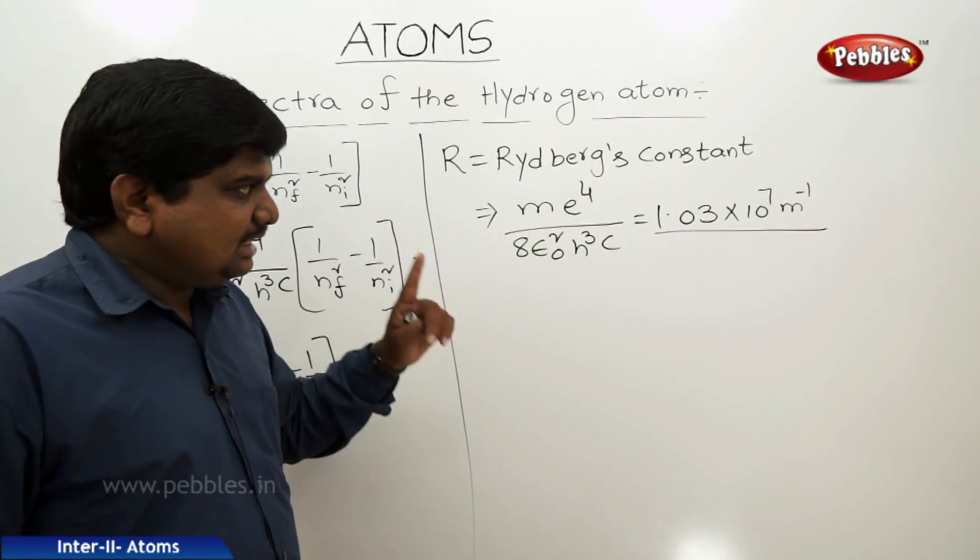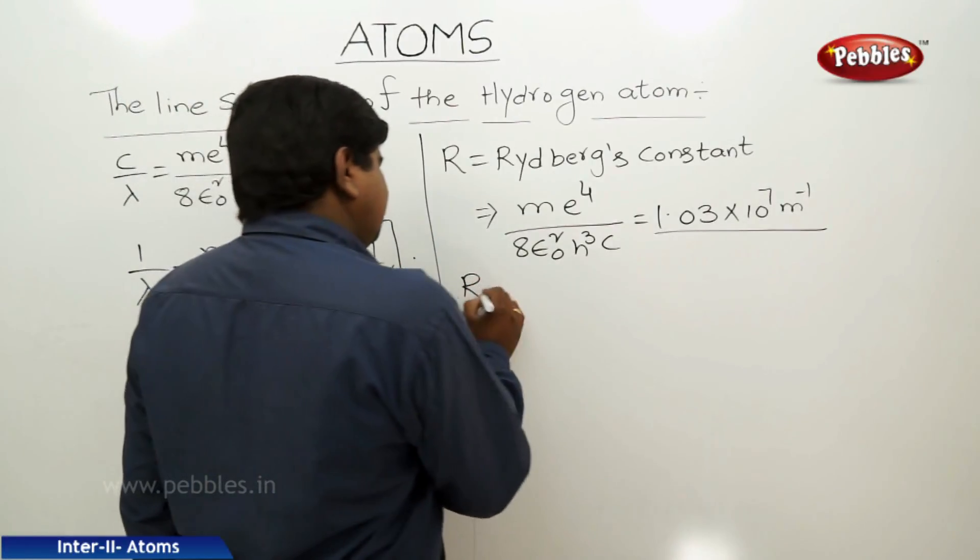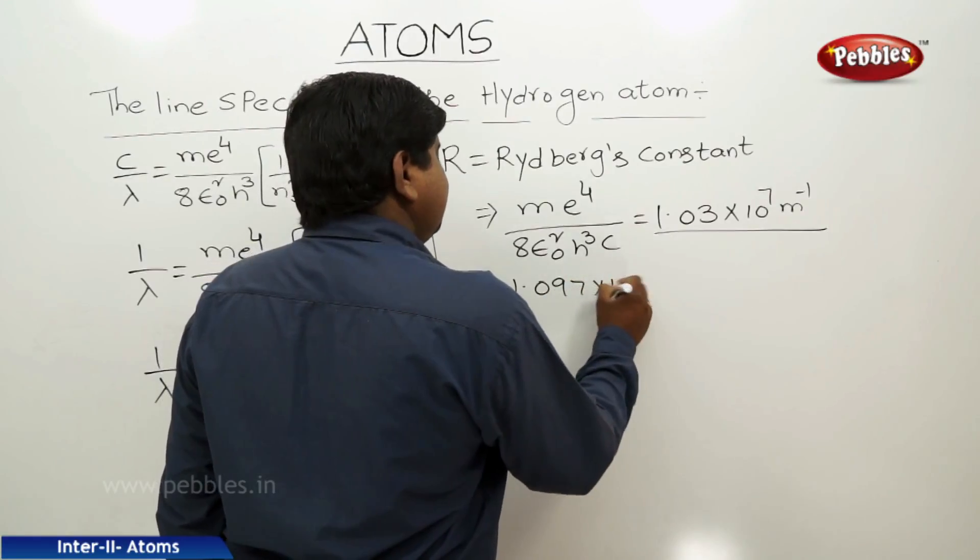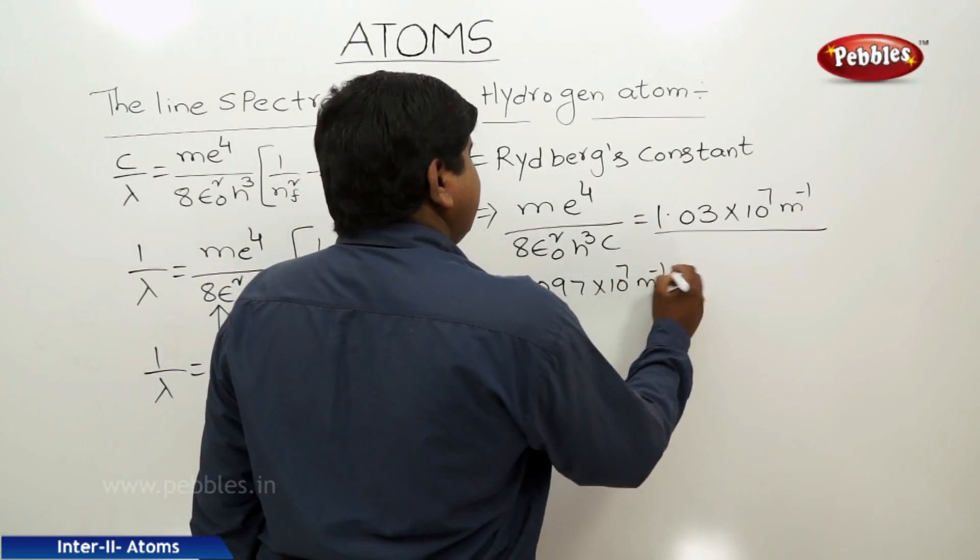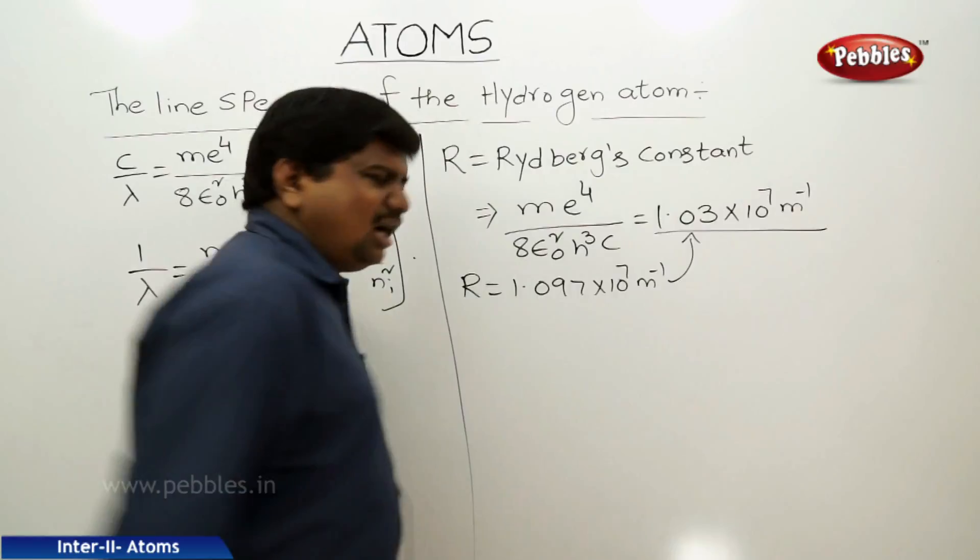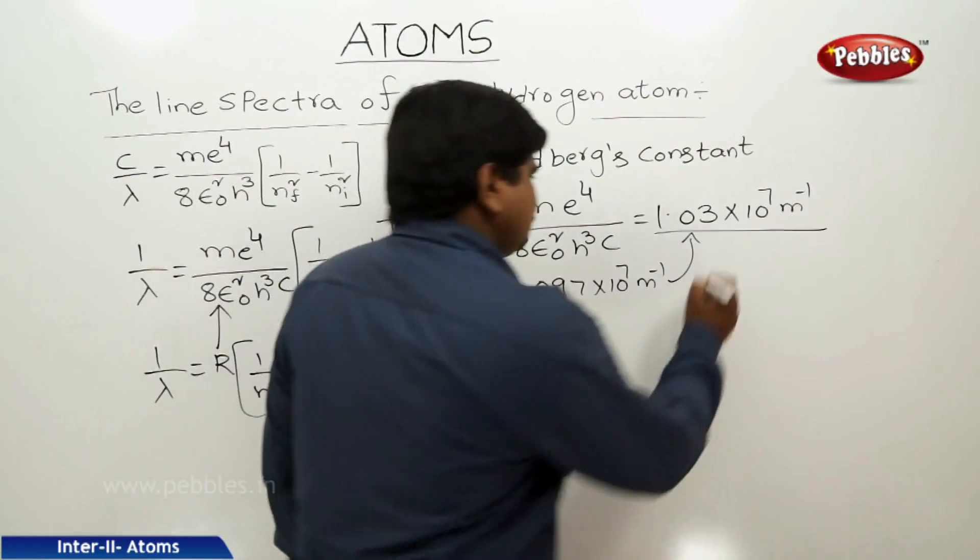But practical values give R equals 1.097×10⁷ meter inverse. They are almost close to each other.